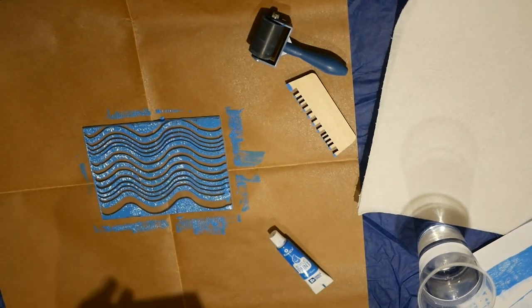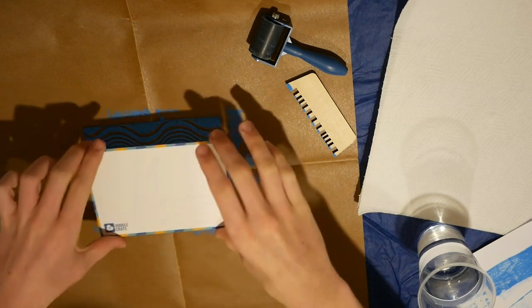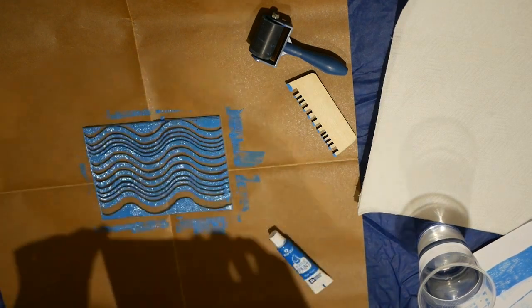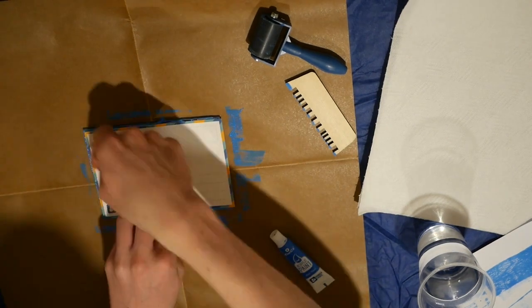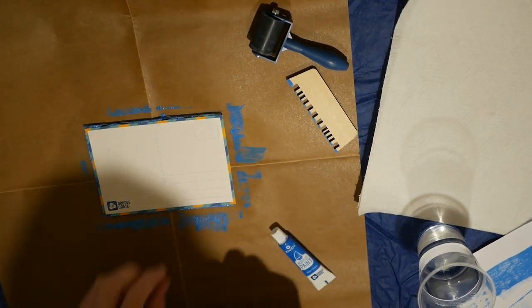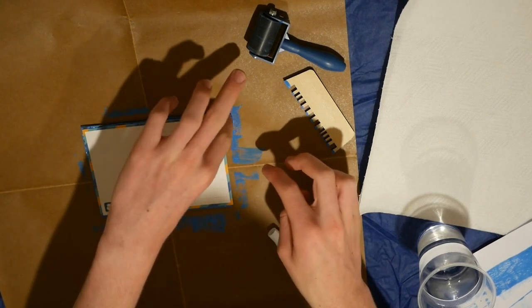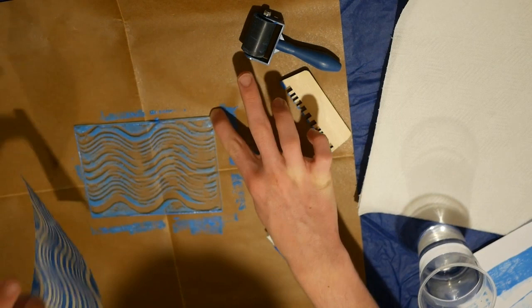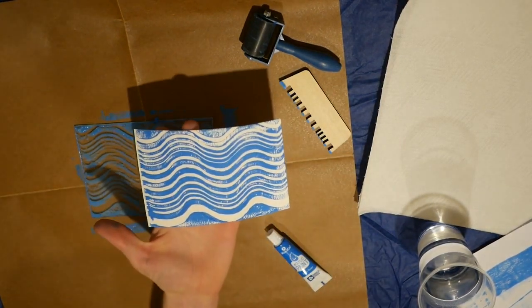So now what we're going to do is we're going to take our postcard and set this down over here and then we're going to peel off. So let's carefully place this down on here. Okay so now we're going to carefully peel this off. And there we have it. We have our first monotype print.